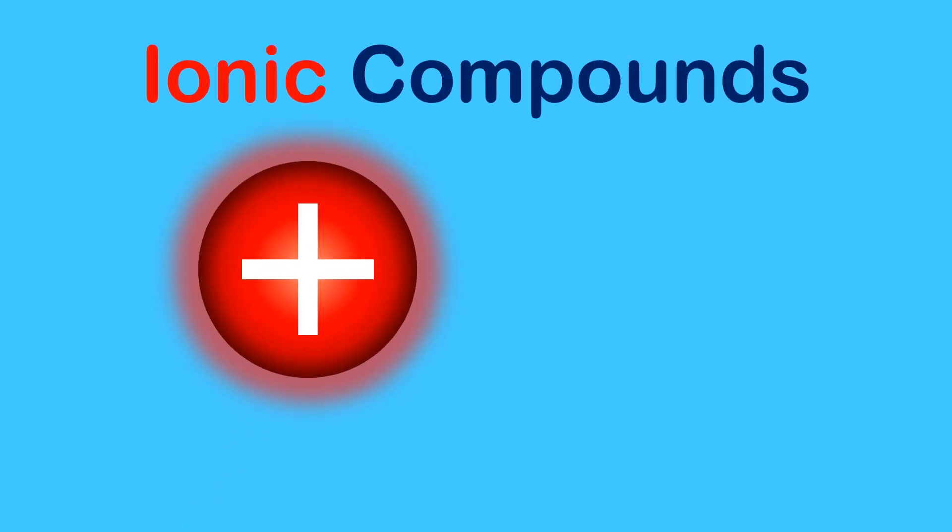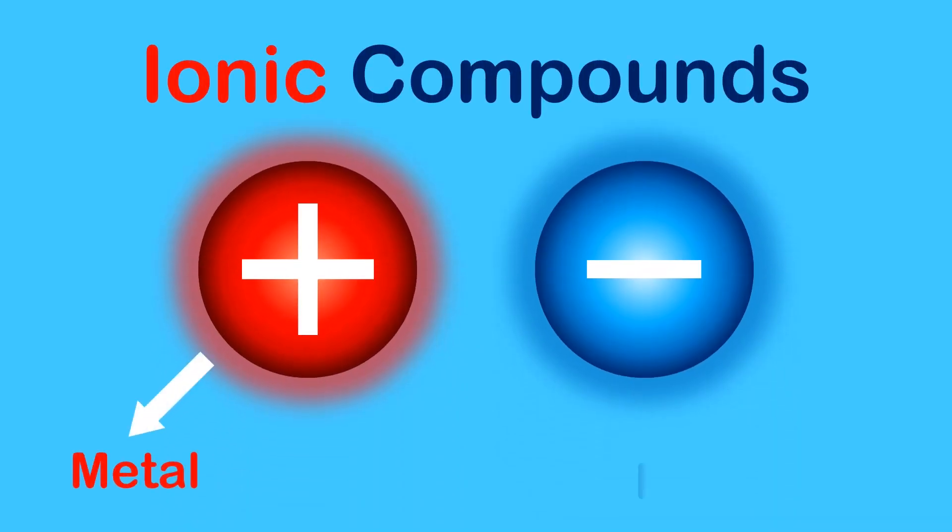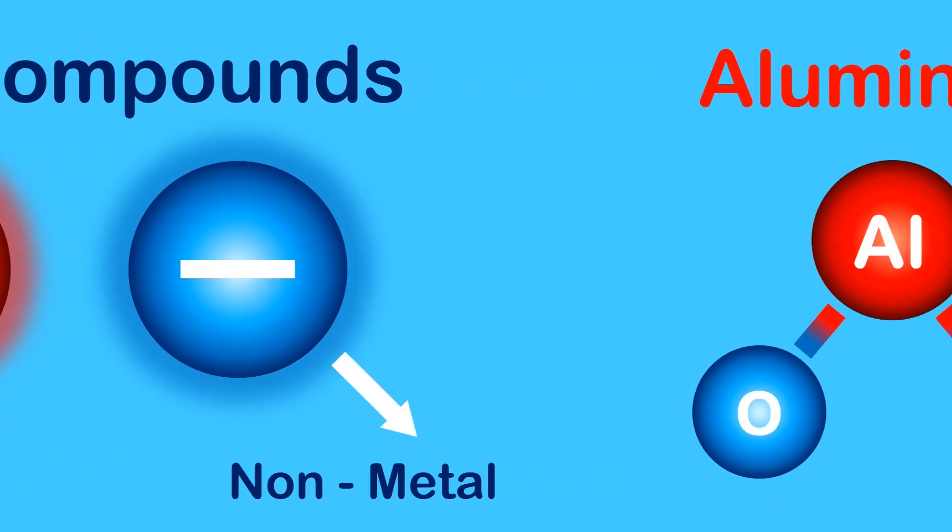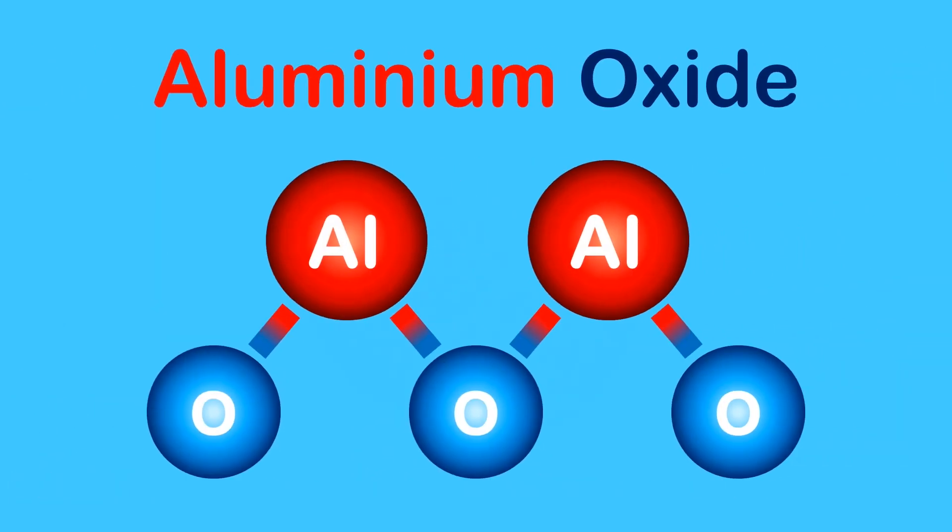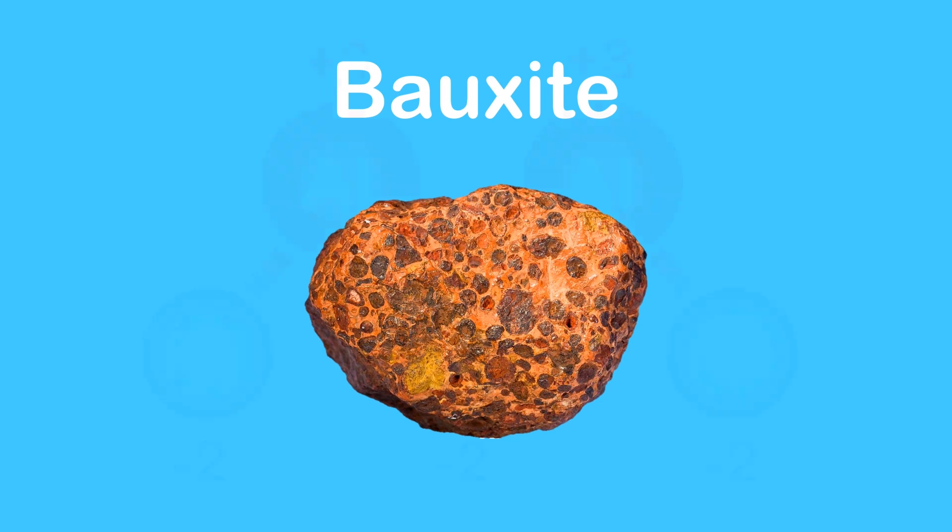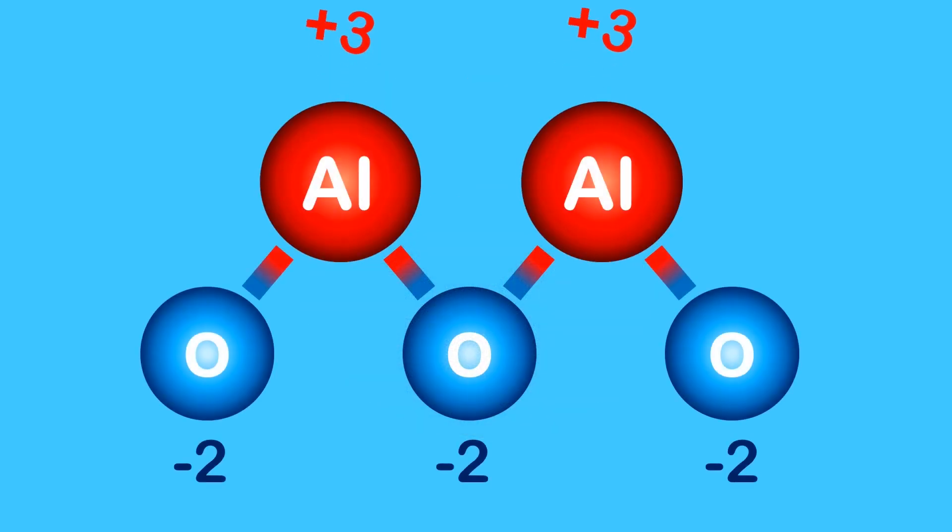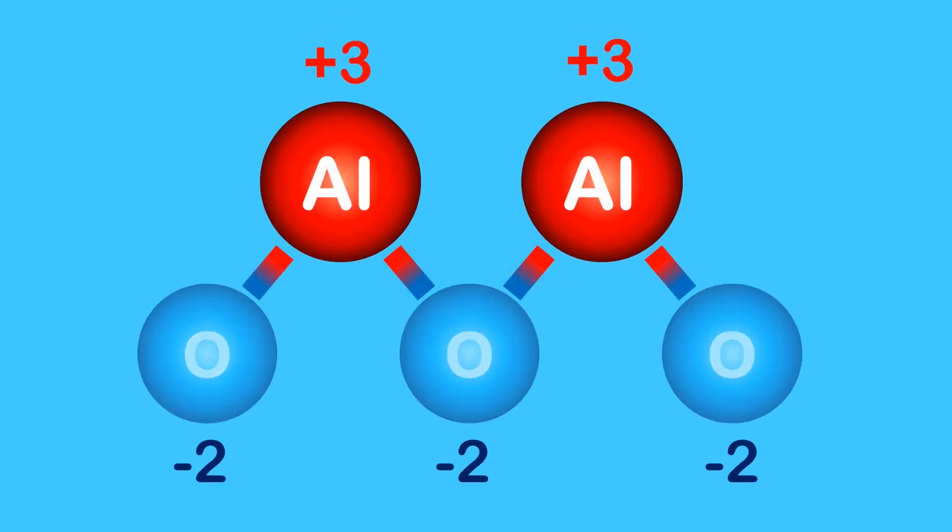Ionic compounds are made of a positive metal ion and a negative nonmetal ion. Take the compound aluminium oxide, commonly found in bauxite ore. It contains positive aluminium ions with a charge of plus 3 and negative oxygen ions with a charge of minus 2.